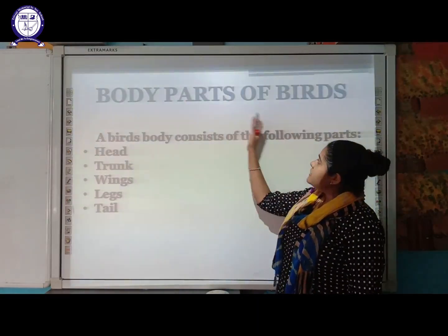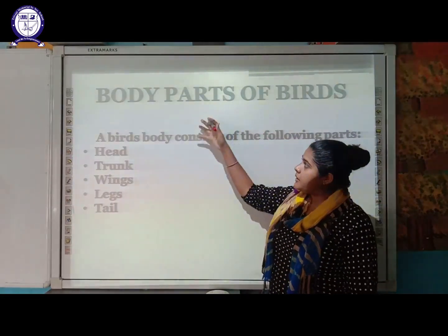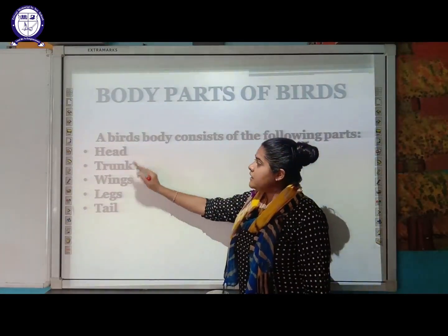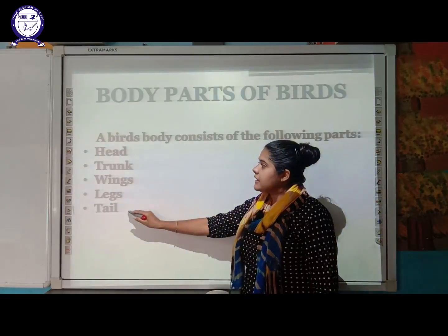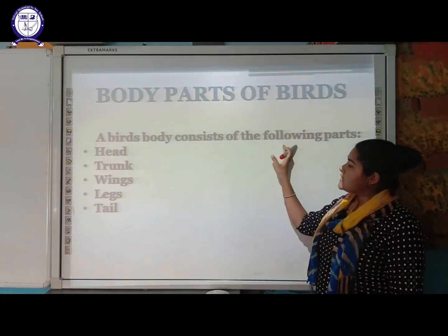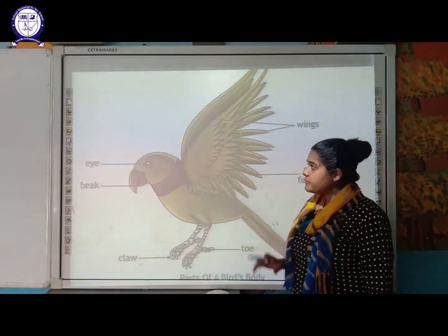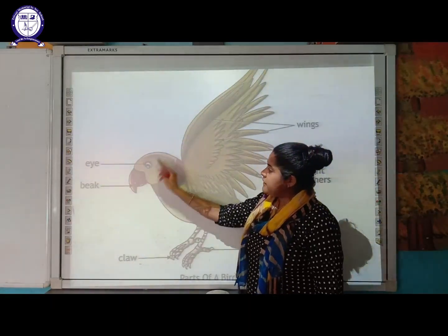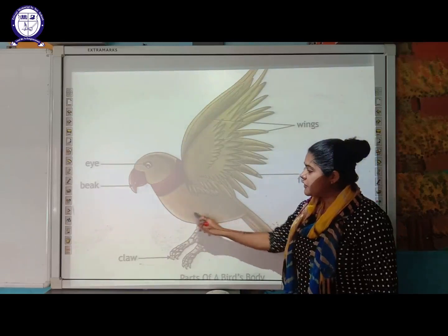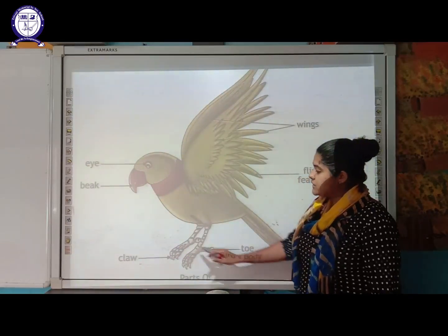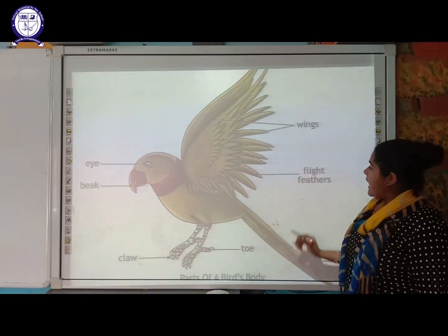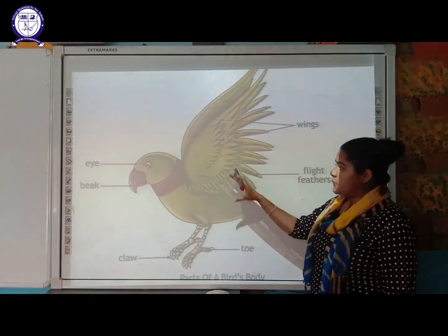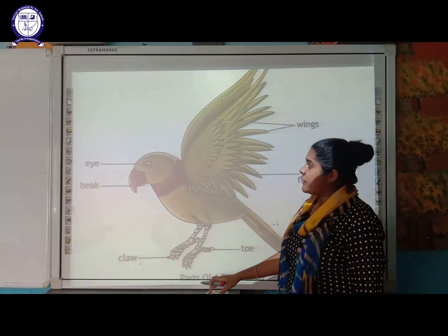Next are the body parts of birds. The body consists of head, trunk region, wings, legs, and tail. Looking at the diagram, the head region includes the eye and beak, then the trunk part, toes forming the two legs, the tail, flight feathers, and the wing.